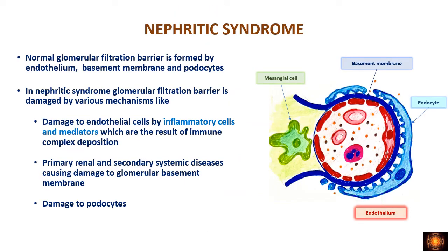If you remember the normal filtration barrier in the glomerular capillaries, this filtration barrier is formed by endothelial cells, the basement membrane, and the podocytes. These three components form the filtration barrier. In the nephritic syndrome, we have damage to the endothelial cells by inflammatory cells and mediators.